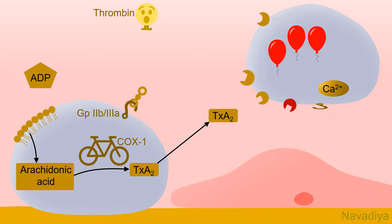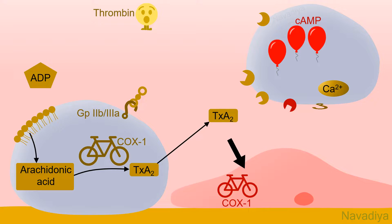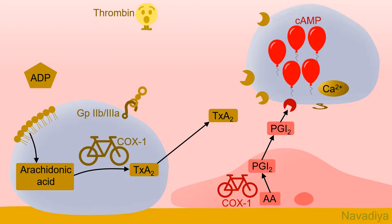In the inactive platelet, there is a high level of cyclic AMP and low level of calcium, which prevents platelets from sticking to other platelets. This inactive state is also supported by healthy endothelial cells. They also have cyclooxygenase 1 like platelets, but they synthesize PGI2 instead of thromboxane A2. PGI2 is an anti-aggregatory prostaglandin, in contrast to thromboxane A2 which is pro-aggregatory. It acts on platelet receptors and increases the level of cAMP. High level of cAMP keeps glycoprotein 2B3A in the inactive state, so the platelet is not sticking to other platelets.